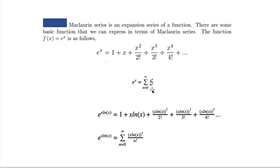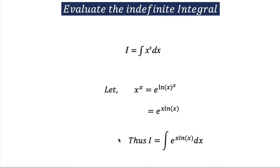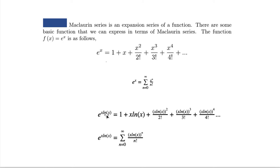This x^n over n factorial is a finite term that can generate all the other terms. Now instead of e^x, instead of x, we are going to substitute x ln x. When we substitute x ln x, we get 1 plus x ln x plus (x ln x)^2 over 2 factorial plus (x ln x)^3 over 3 factorial plus (x ln x)^4 over 4 factorial. The general term is (x ln x)^n over n factorial, so e^(x ln x) equals the sum from n equals 0 to infinity of (x ln x)^n over n factorial.